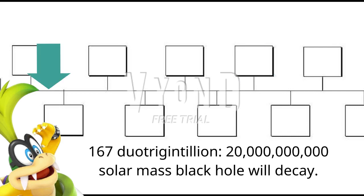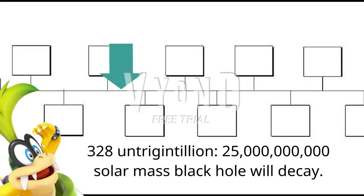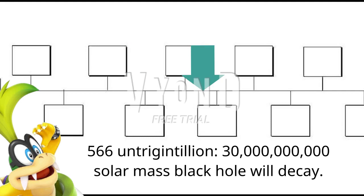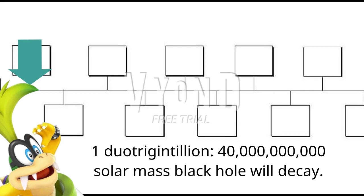167 Duotrigentillion: a 20 billion solar mass black hole will decay. 328 Untrigentillion: a 25 billion solar mass black hole will decay. 566 Untrigentillion: a 30 billion solar mass black hole will decay. 900 Untrigentillion: a 35 billion solar mass black hole will decay. 1 Duotrigentillion: a 35 billion solar mass black hole will decay.